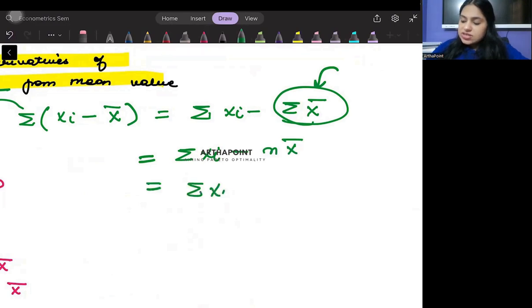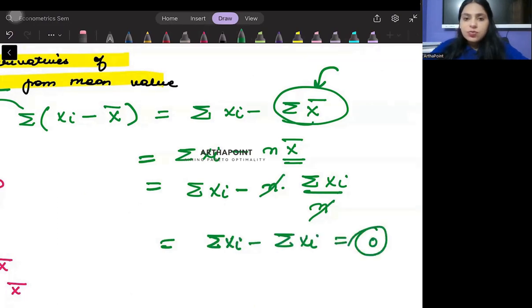So this will be summation xi minus n, and I will now open this x bar as summation xi by n, and this will be summation xi minus summation xi, and this will be zero.